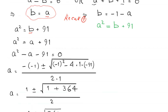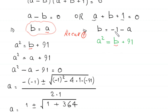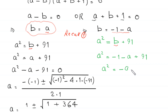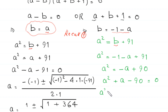Now we solve the second system. In the second case, we replace b with the value negative 1 minus a in equation 1. This becomes a squared is equal to negative 1 minus a plus 91. Simplifying, a squared equals negative a plus 90. Moving these terms to the left hand side gives a squared plus a minus 90 equals 0.